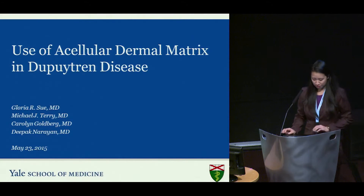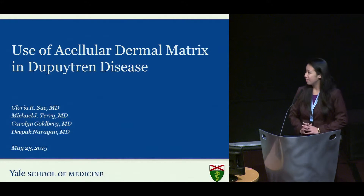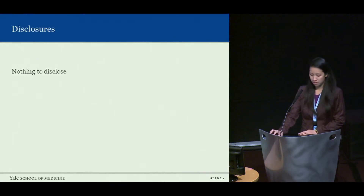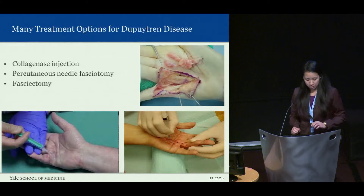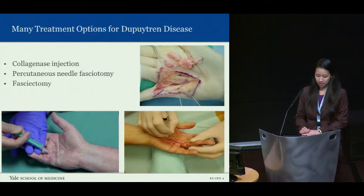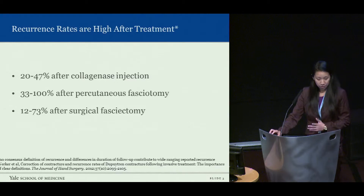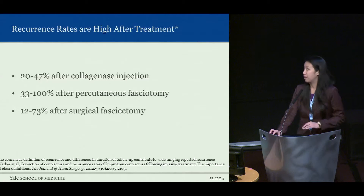Thank you very much. It's an honor to be here. I'll be discussing our experience with the use of an acellular dermal matrix in the treatment of Dupuytren's disease. We have nothing to disclose. As we've discussed over the past couple of days, many treatment options are available for Dupuytren's disease, but none of these are ideal. The recurrence rates for all three of the most commonly used treatment modalities are all very high.